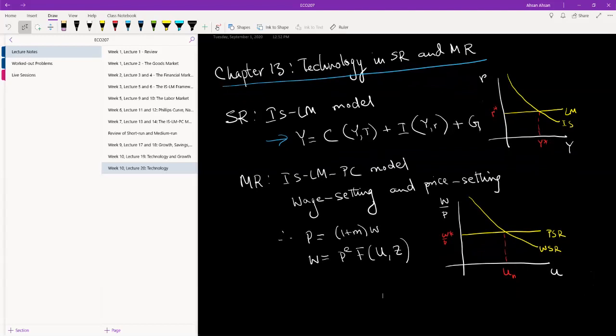We started with the goods market and the financial market, and then together we created the IS-LM model. We are going to be using the AD curve for our analysis with technology. Then we moved on to the medium run analysis where we looked at the labor market and inflation and Phillips curve.